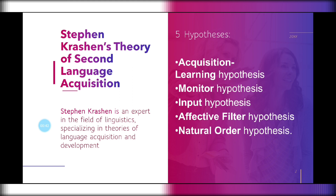Stephen Krashen is an expert in the field of linguistics, specializing in Theories of Language Acquisition and Development. This theory of second language acquisition has five hypotheses: the Acquisition-Learning Hypothesis, Monitor Hypothesis, Input Hypothesis, Affective Filter Hypothesis, and Natural Order Hypothesis. We're going to discuss these one by one with a short discussion.